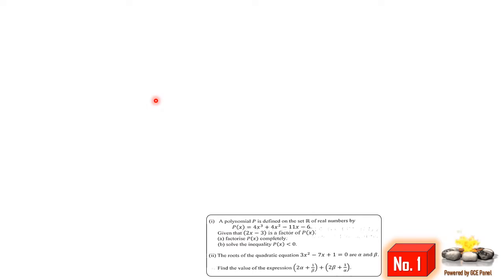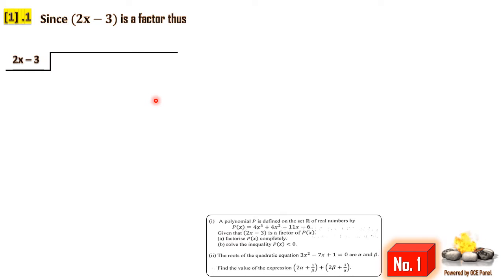According to this question we have been told that 2x minus 3 is a factor, therefore we can use long division to get the other factors. We are going to divide the polynomial p(x) — that is 4x cubed plus 4x squared minus 11x minus 6 — by 2x minus 3.